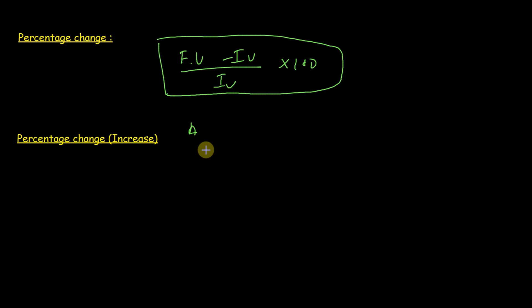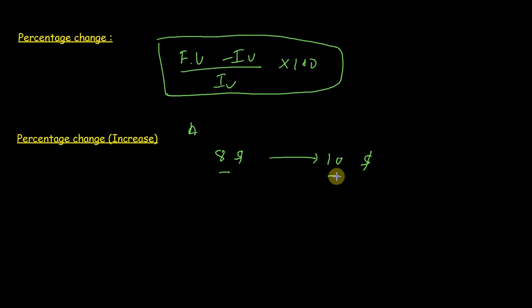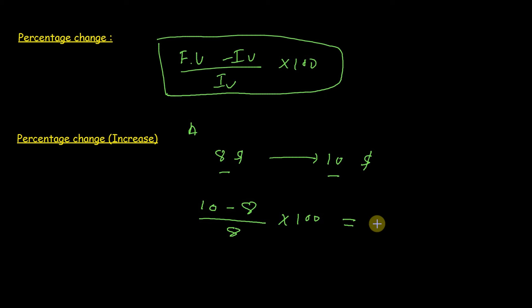First, let's see what is increase percentage change. Take an example: suppose there is a person A whose daily income increases from $8 to $10. Here the initial value is $8 and the final value is $10. According to the formula: final value minus initial value, divided by initial value, multiplied by 100 — after solving, this gives us 25%. That's how we calculate the increased percentage change.